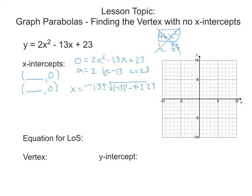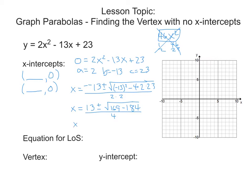That's 4 times a times c in the root, all over 2 times a. We get x equals negative negative 13, which is 13, plus or minus the square root of negative 13 squared — that's 169 — minus 4 times 2 times 23, which is 184, all divided by 4. So x equals 13 plus or minus the square root of 169 minus 184, which is negative 15, divided by 4.